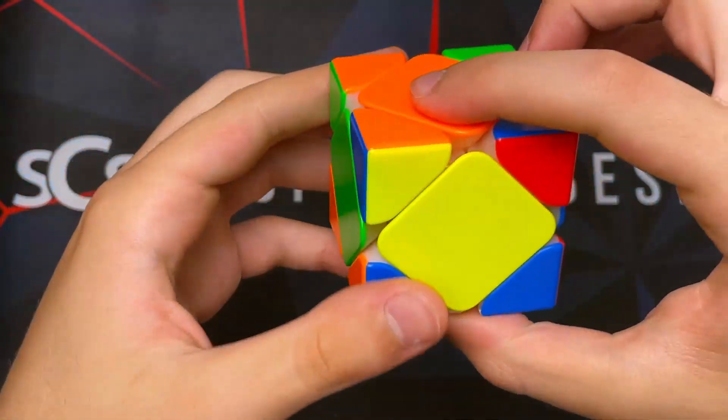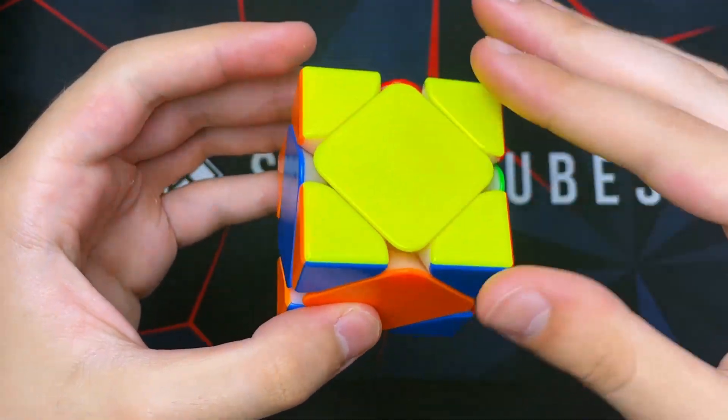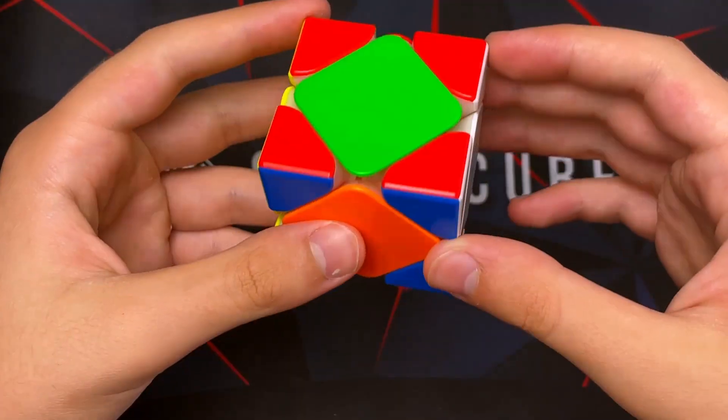Then rotate the cube 180 and then do the algorithm again. And then you've solved yellow on top.